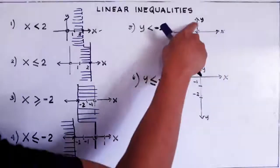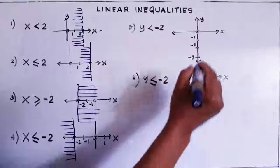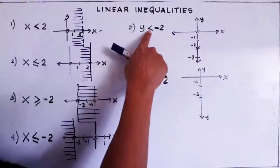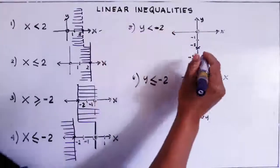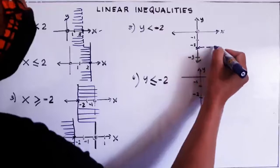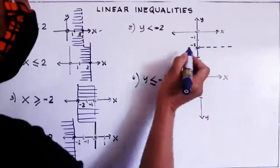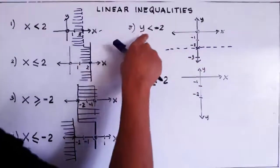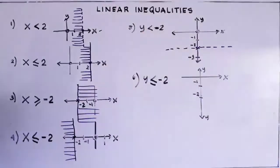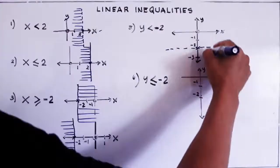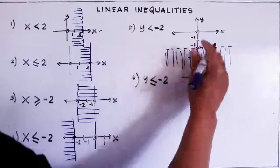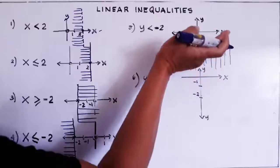Negative two is here on the y-axis. That's positive one going up, that is the origin, and negative two is here. We draw our line — what kind of line? That is less than only, so that is a dotted line. We draw the dotted horizontal line at y equals negative two, meaning negative two is not included. Then we shade — it is less than, meaning it's going down. So we shade downward.